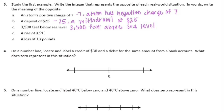If it's rising it's getting bigger, so that's positive. The opposite would be negative 45 degrees Celsius. They just want the integer, which is negative 45, and the meaning of that would be a decrease of 45 degrees Celsius.